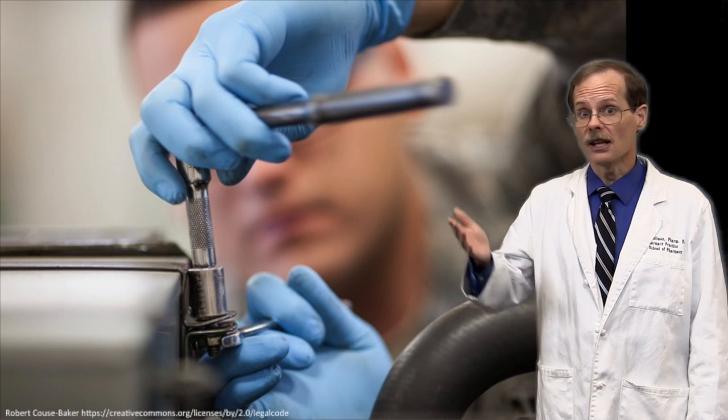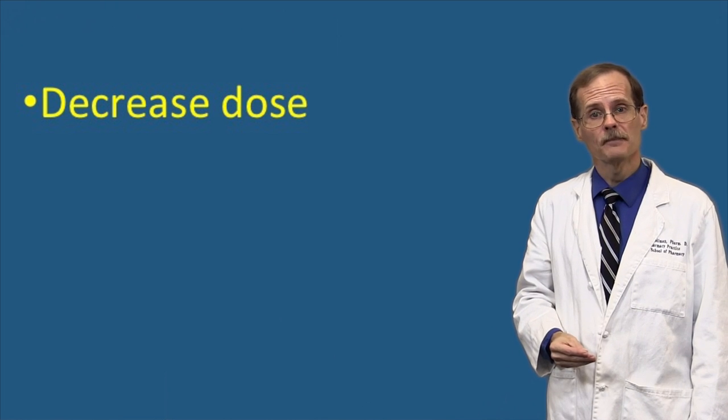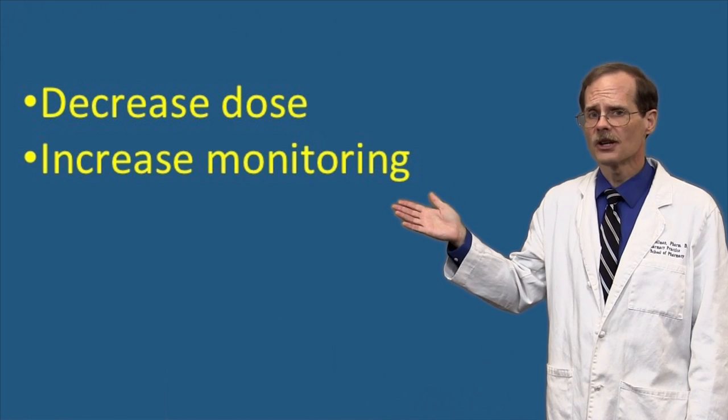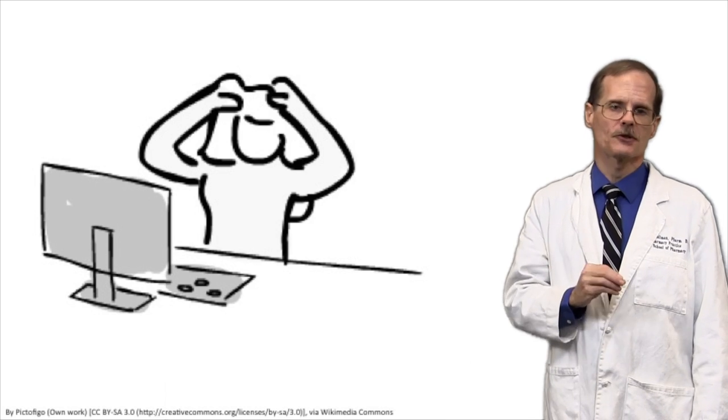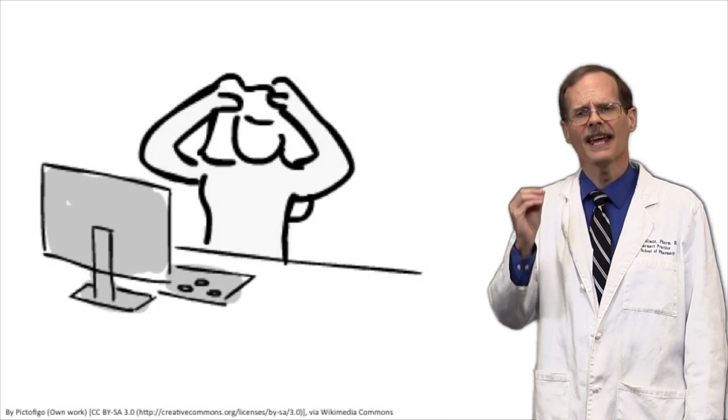That's nice to know, but the package insert doesn't tell us how much to change the dose in patients with CHF or shock. Do we change it a little? A lot? There really isn't an official answer. Some sources might recommend decreasing the dose 25 to 50%; others might stress the importance of checking serum concentrations. Since we don't have a good way of directly measuring hepatic blood flow, we'd be guessing anyway. This often frustrates pharmacy students because it seems like there should be a correct answer.